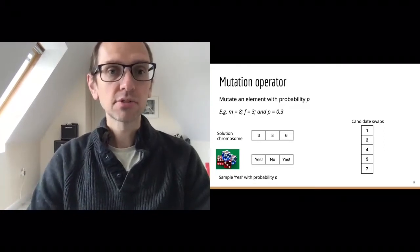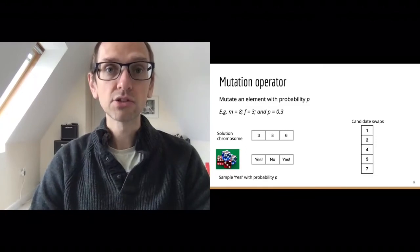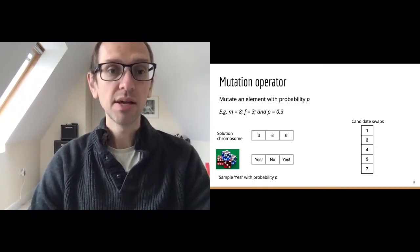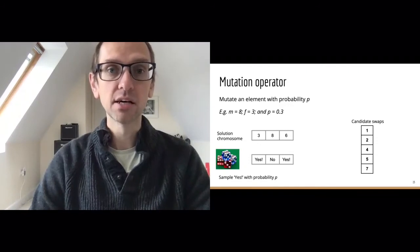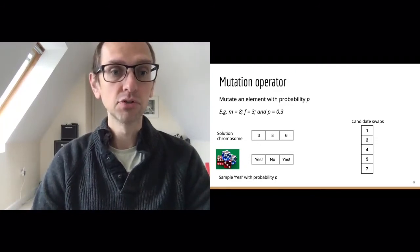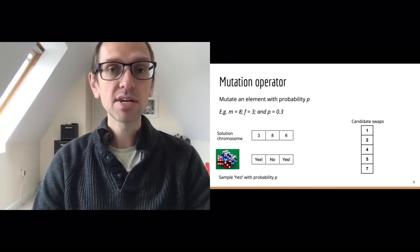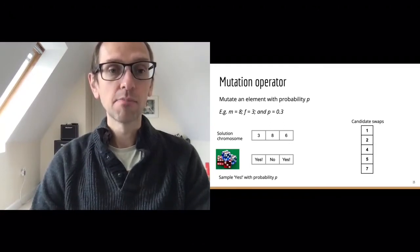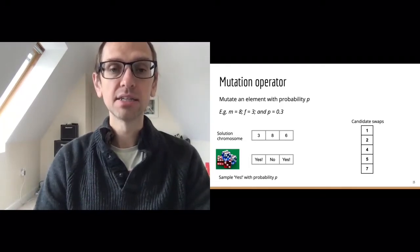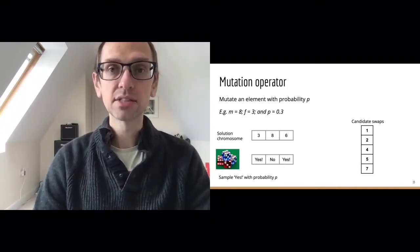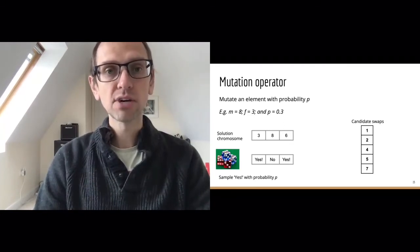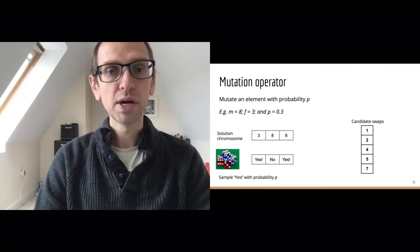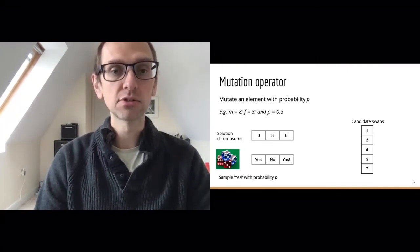We generate random samples to decide whether to swap each element of our solution array. We've generated three yes/no values: element 1 is yes, element 2 is no, and element 3 is yes. So we know that 8 will remain in our mutant, but 3 and 6 won't. We now need random sampling to decide which of the candidate swaps to move into our new mutant.